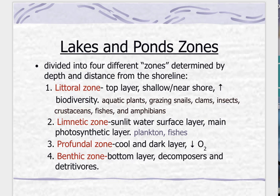The first zone is called the littoral zone. This is the top layer — it's very shallow, very similar to your tide zone in the ocean, right at the border where the shore is. You have a huge amount of biodiversity: aquatic plants, grazing snails, clams, insects, different crustaceans, cattails — which you see sometimes in ponds around here in Alabama — and lots of fish and amphibians.